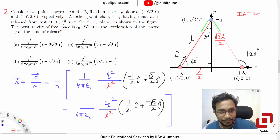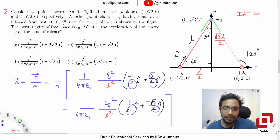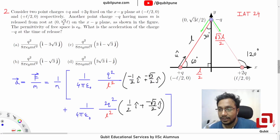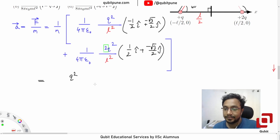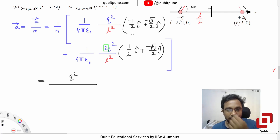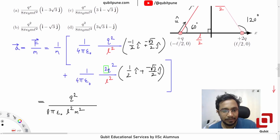Now looking at the options, in the scalar part outside the vector the denominator has 8, which is a clear hint that the factor of 2 should be taken outside along with q²/l². Taking 2 as common gives us q²/(8πε₀l²) — and that constant q²/(8πε₀l²) is present in all options.